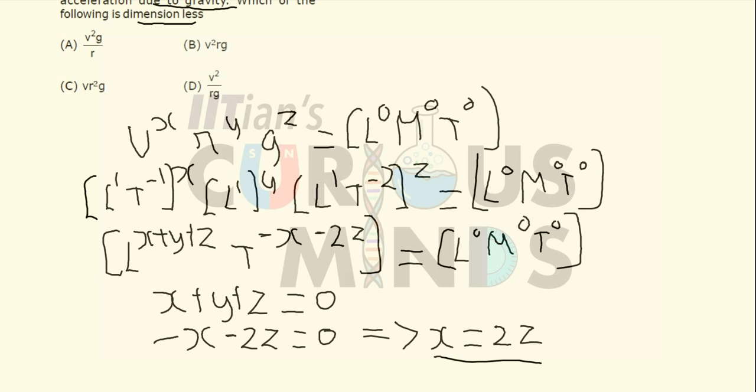Now this is the condition that it should follow: X plus Y plus Z should be equal to 0 and X should be equal to 2 times Z.